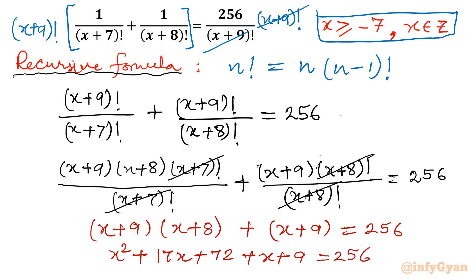So that will give us x square plus 8x plus 9x, 17x plus 72. So I can write x square plus 17 plus 1, 18x plus 72 plus 9, 81 equal to 256. Let us take all the terms towards left.